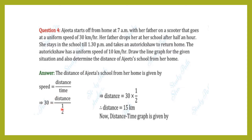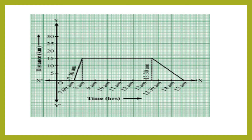The speed is 30 km per hour and the time is half an hour. Both the units are the same. If we cross multiply, the distance is 15 km. After reaching the school, she stays till 1:30 p.m. and returns home by auto rickshaw at 10 km per hour. We calculate the time taken to return home; the time period is 1.5 hours. Time is taken along the x-axis and distance in km along the y-axis.